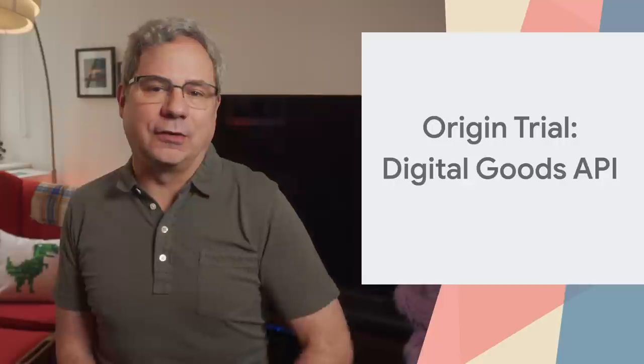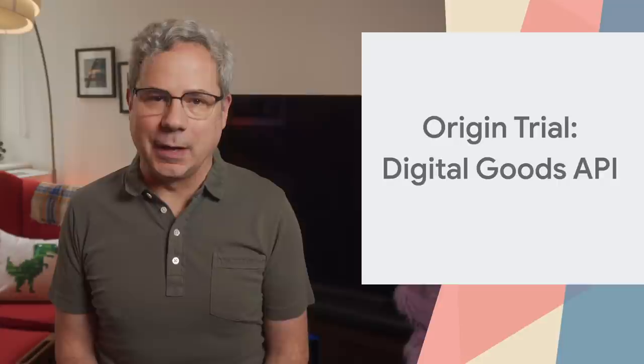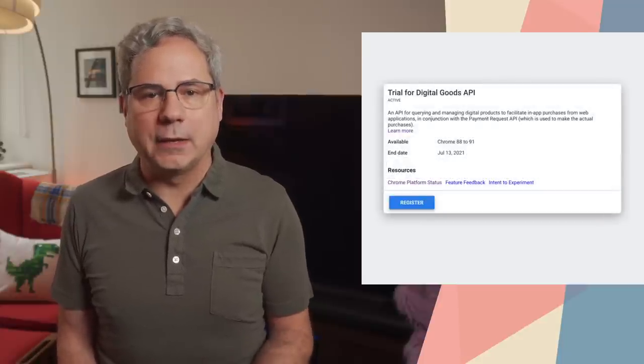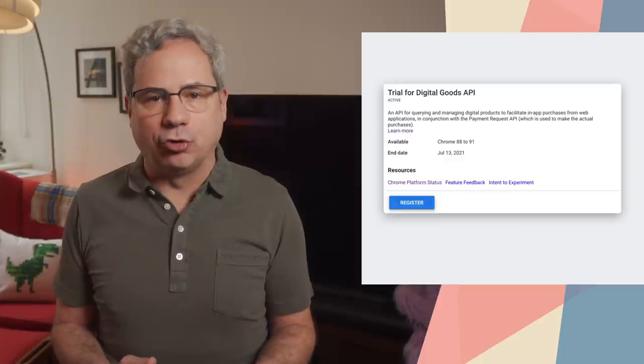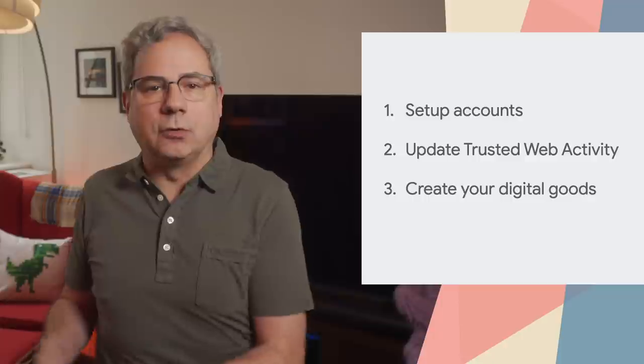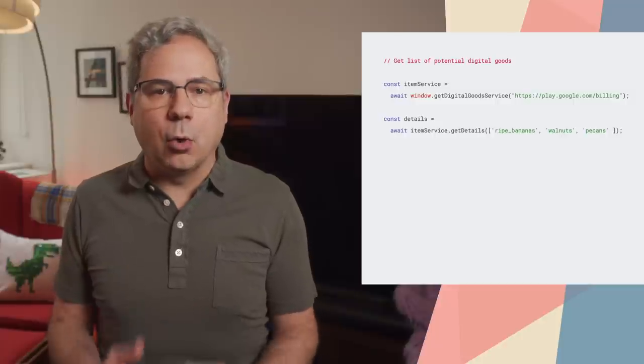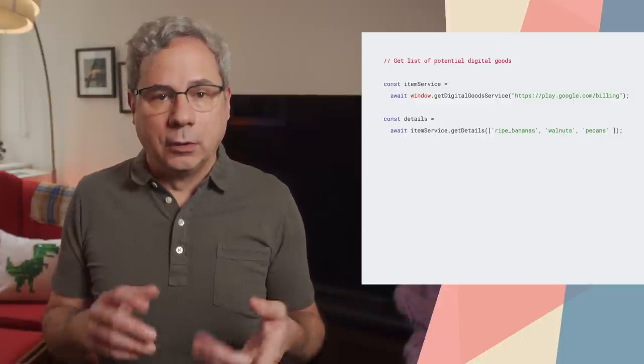You can now use Play Billing in your Trusted Web Activity to sell digital goods and subscriptions using the new Digital Goods API. It's available as an origin trial in Chrome 88 on Android, and we expect to expand the origin trial to Chrome OS in the next release. Once your accounts are set up, update your trusted web activity to enable Play Billing, and then create your digital goods in the Play Developer Console. Then, in your progressive web app, add your origin trial token, and you're ready to add the code to check for existing purchases, query for available purchases, and make new purchases. Adriana and Andre go into more detail in their Chrome Dev Summit talk, or check out the docs linked in the description below.